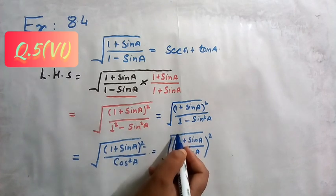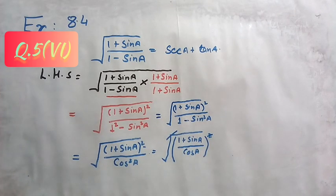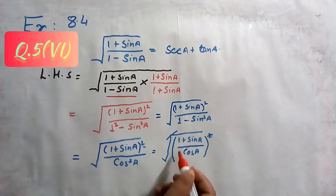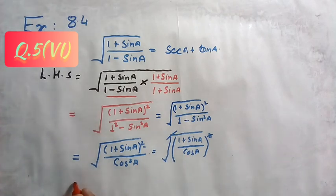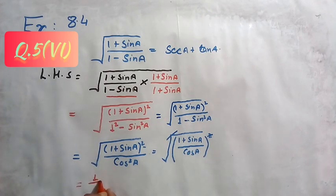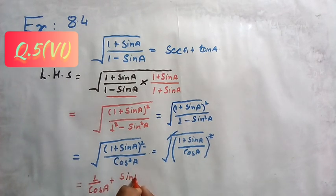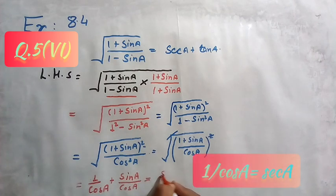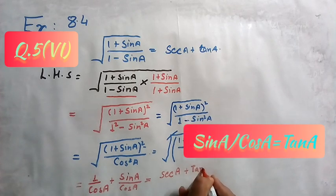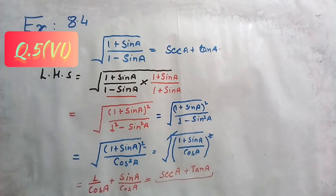Now we can write it as a common power: (1 + sinA) / cosA, whole squared. The square cancels with the square root. Now divide cosA into each part of the numerator separately: 1/cosA plus sinA/cosA. We know 1/cosA equals secant A, and sinA/cosA equals tangent A, which equals the right hand side of the question.